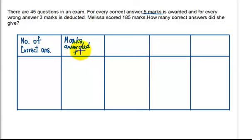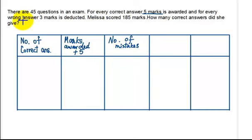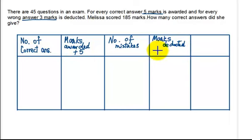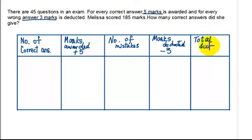Because it's being awarded, we'll write it as plus 5 to show that marks are being awarded. And the next category is the number of mistakes. We know that for every wrong answer, 3 marks are being deducted. So here we will record the marks that are being deducted, and because it is being deducted, we will indicate it with a minus sign here, minus 3. So here we will see the total marks scored, or we'll just say total score.